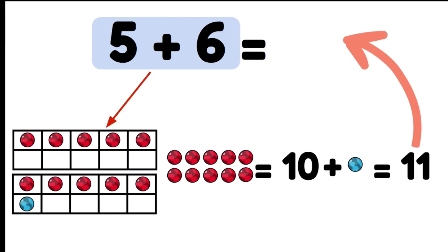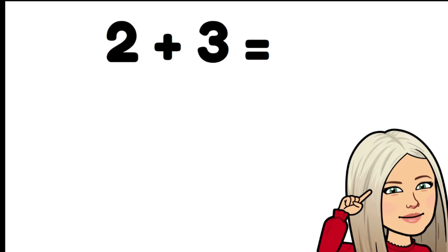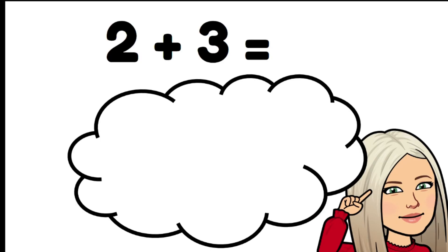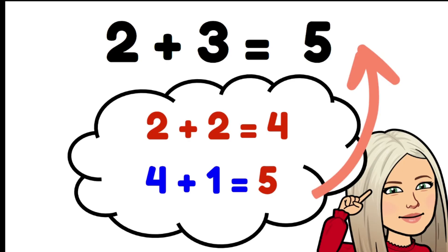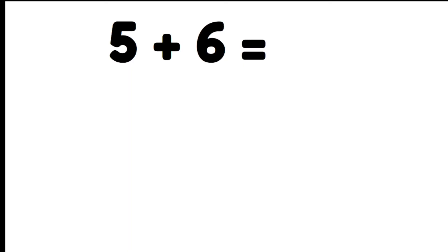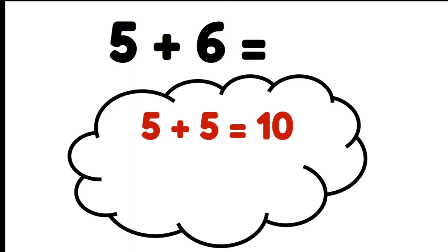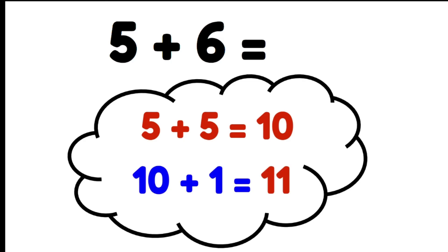Let's have a look at what we're actually doing in our heads. Two plus three — we're going to use double two. Two plus two is four. Now when we look at our problem, three is one more, so our answer must be one more than four. Four and one more is five, so two plus three is five. Now five plus six: six is one more than five, so we use double five and then add one more. Five plus five gives us ten, and ten and one more makes eleven, so five plus six must be eleven.